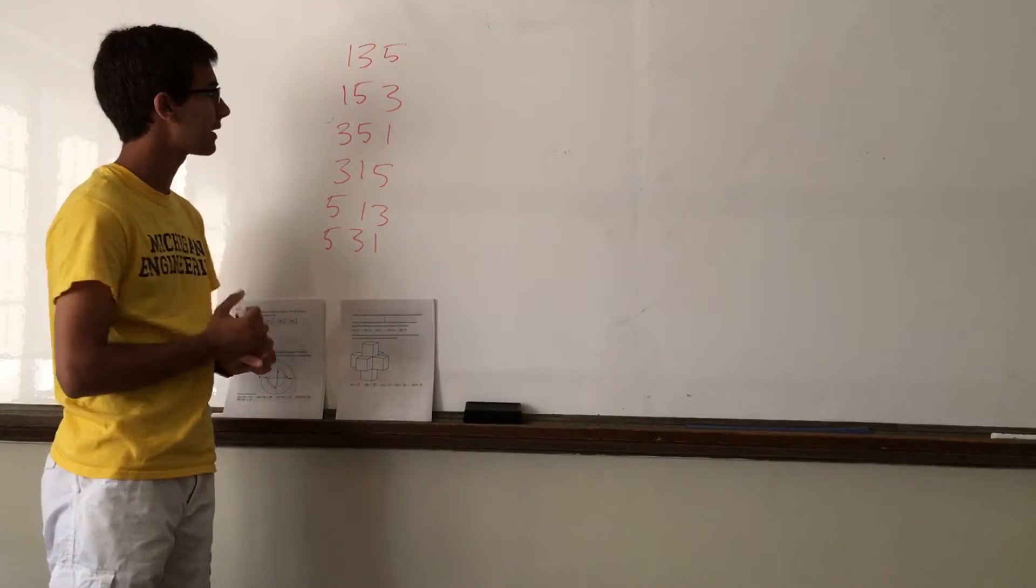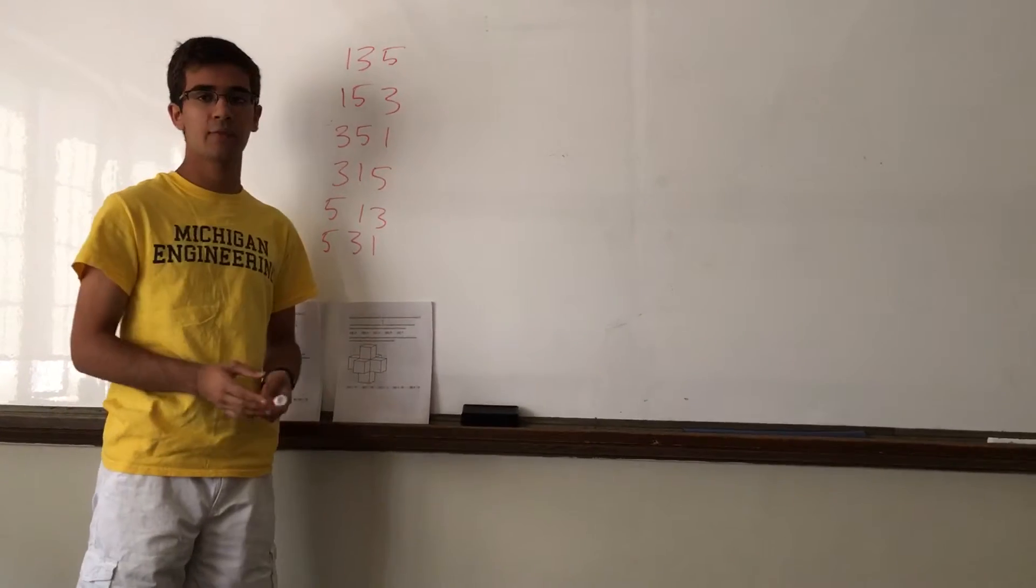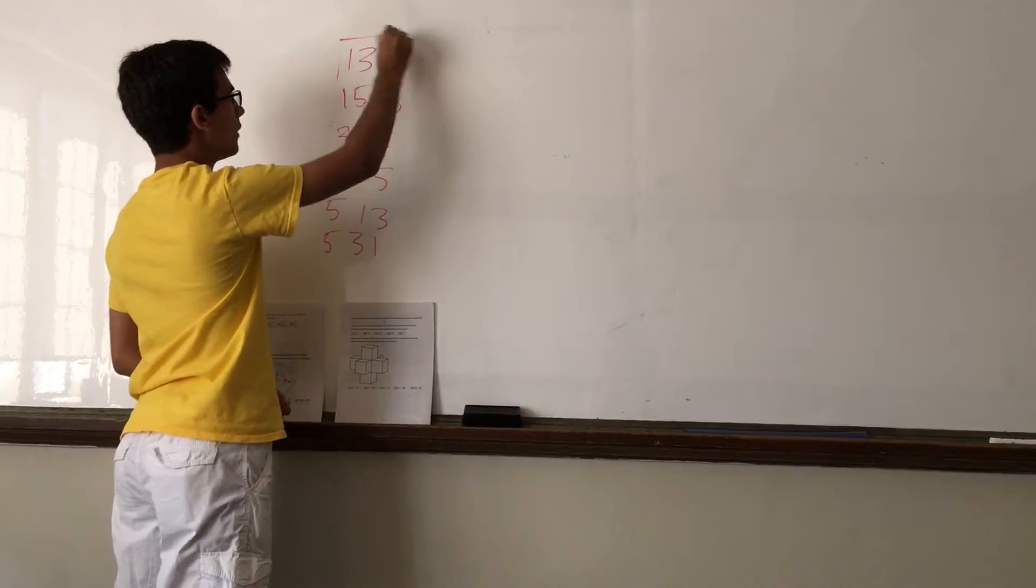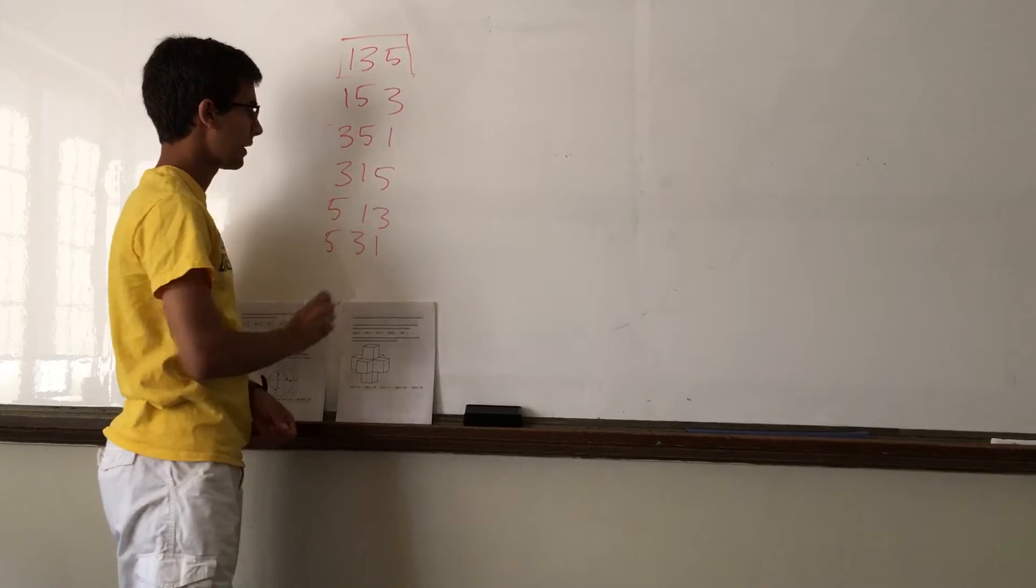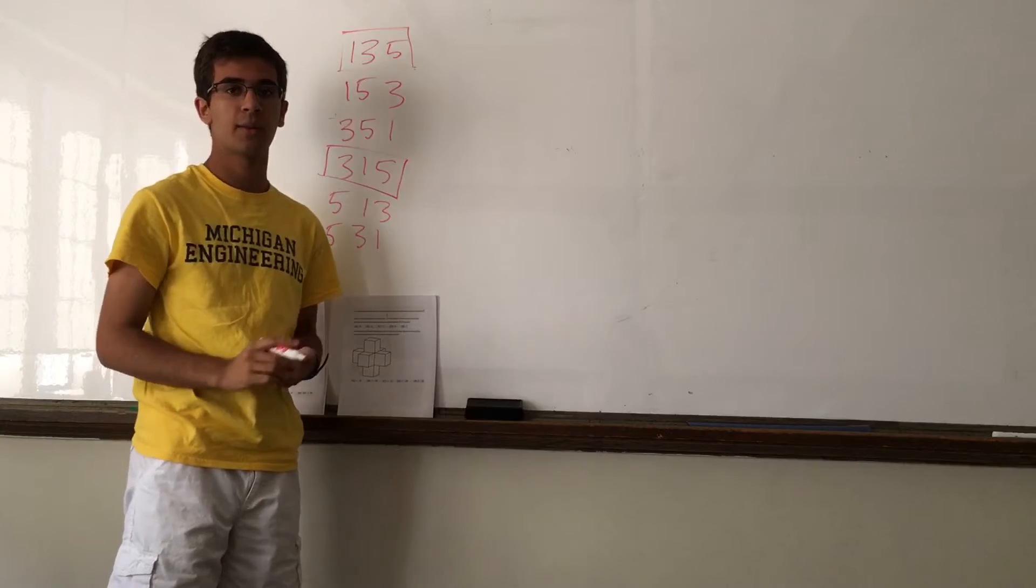Now, we need to find which of these six are divisible by 5. Well, any number divisible by 5 will always end with 5. So we can see that is 135 and 315. These are the only two that end with the number 5.